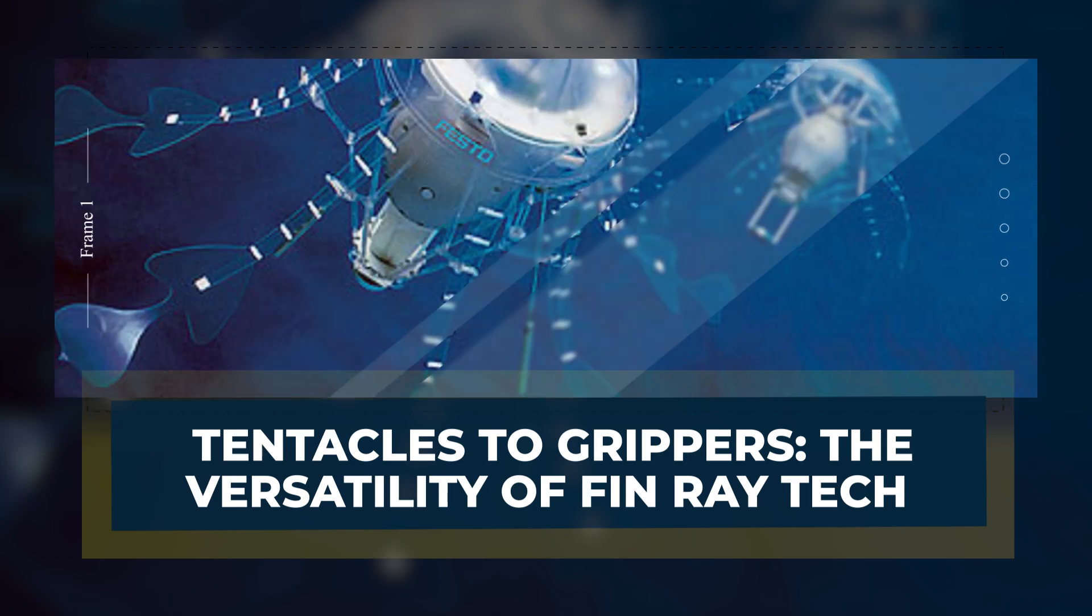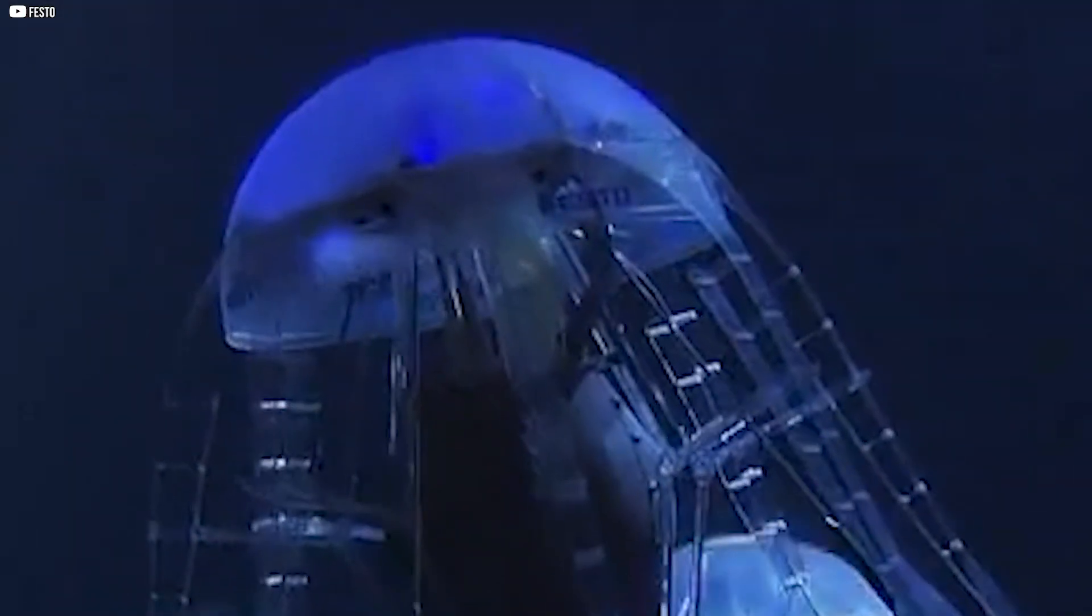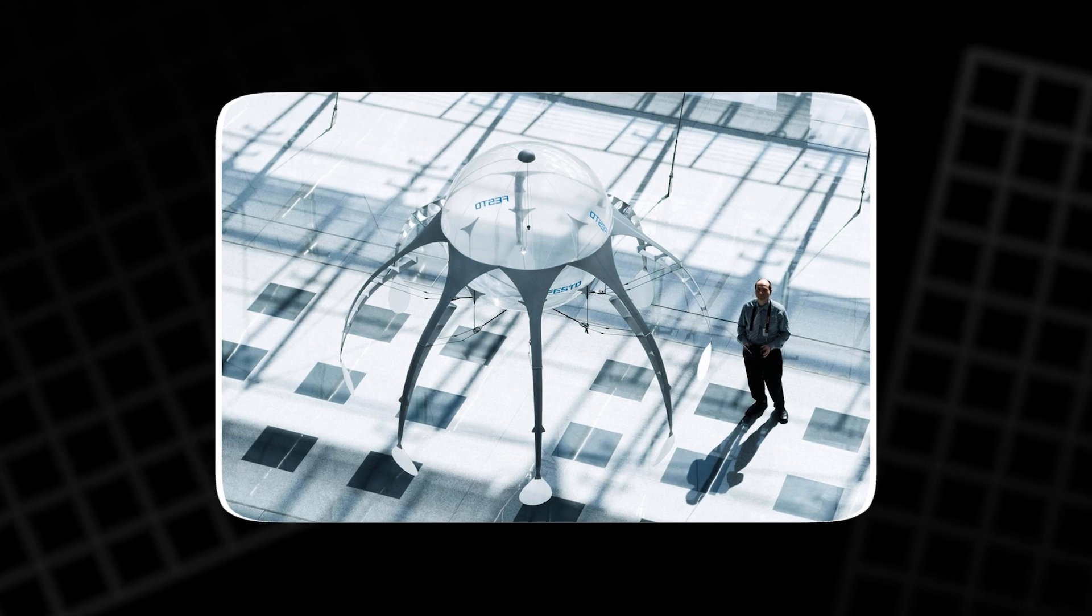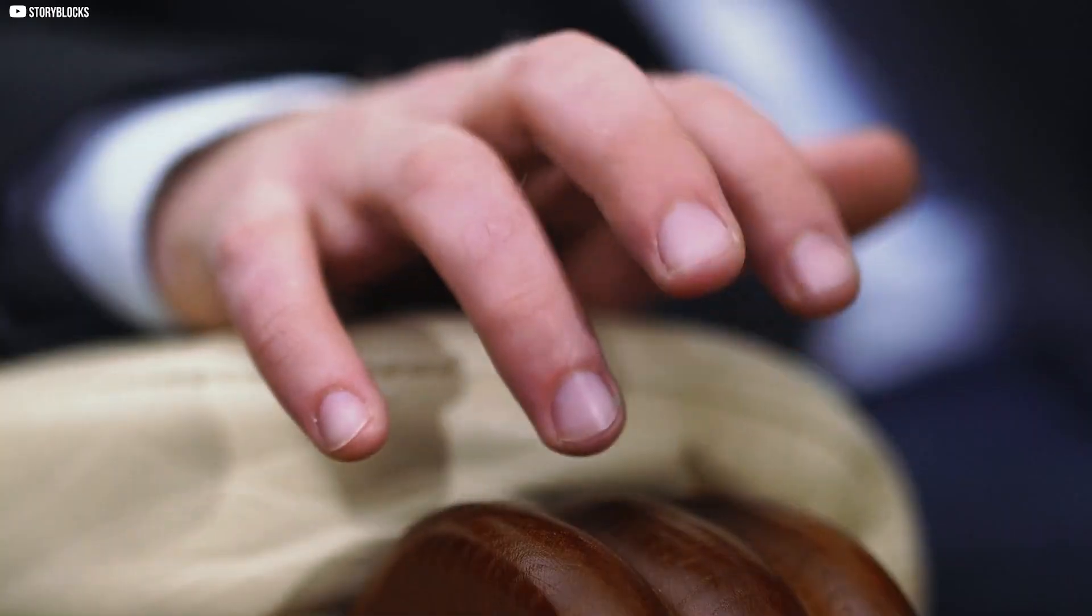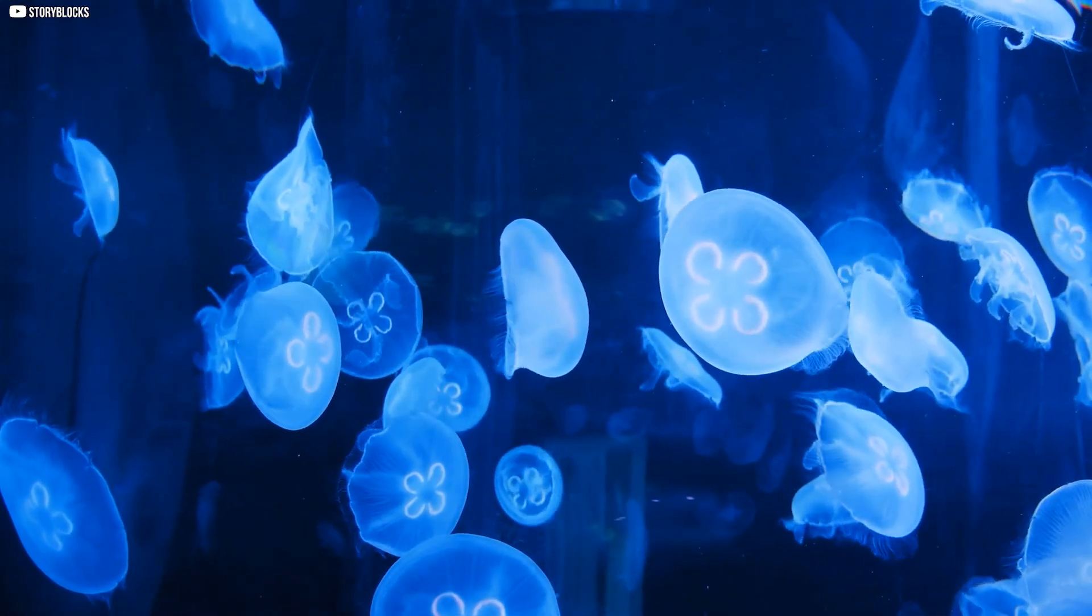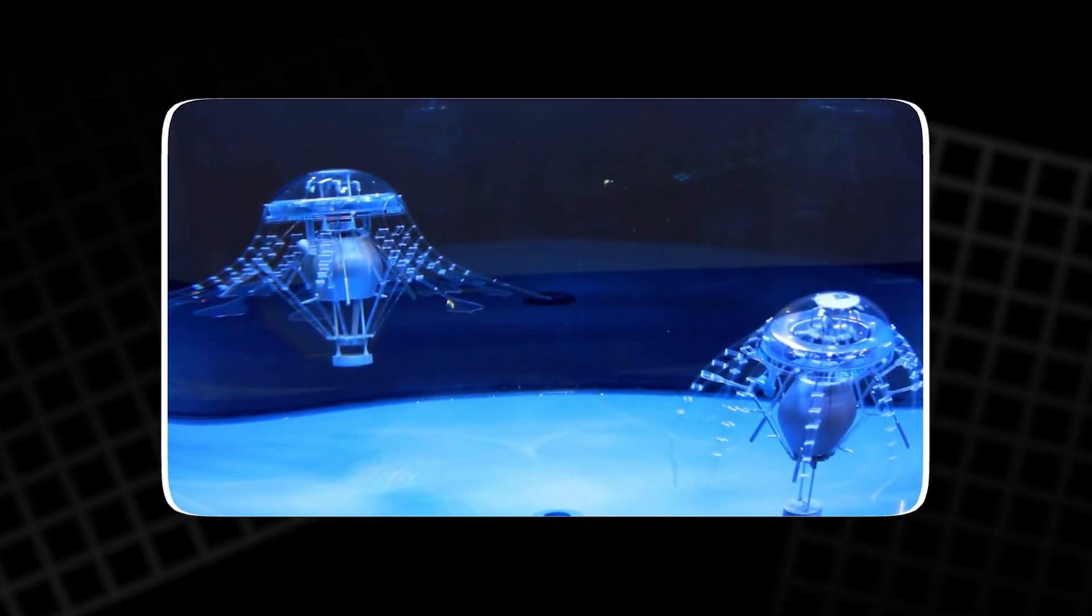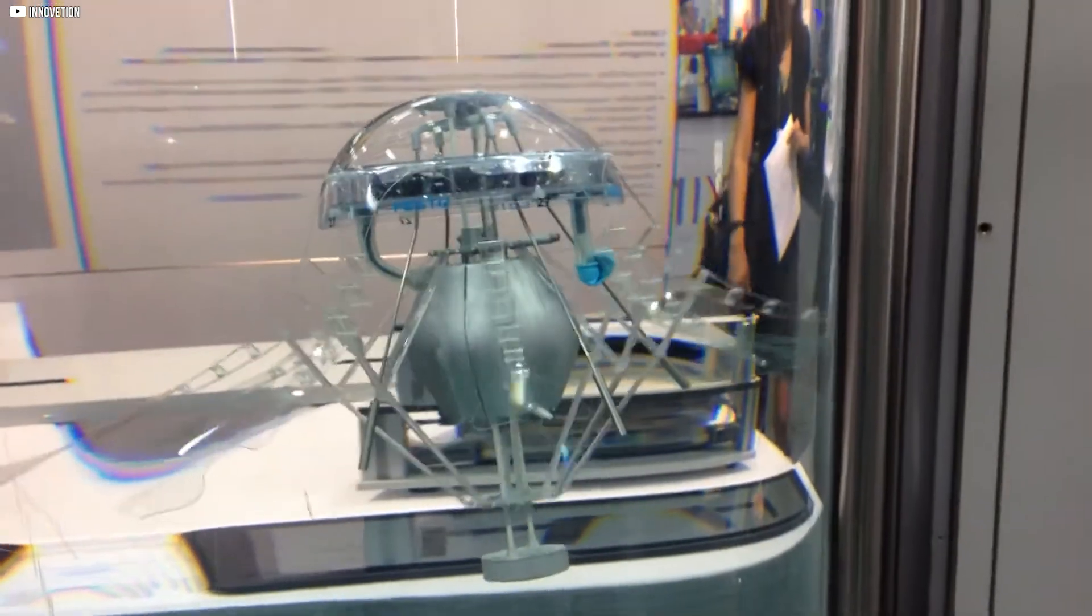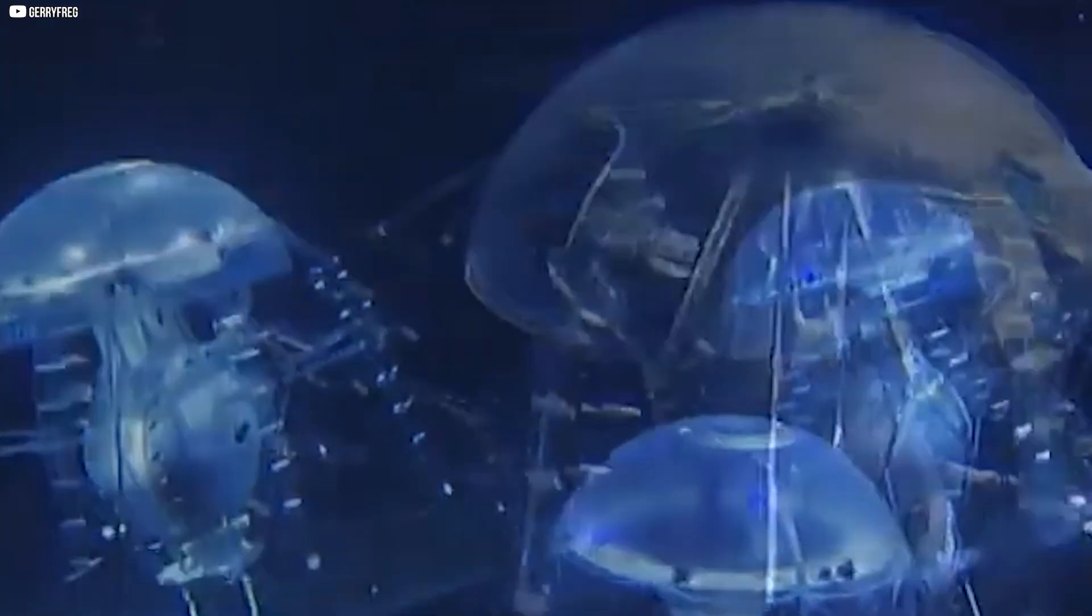Tentacles to grippers. The versatility of finray tech. The soft, flexible arms of the Aqua jelly aren't just for swimming. They're made with Festo's finray technology, originally inspired by fish fins. Instead of bending like a jointed robot arm, these structures flex and twist like living tissue. That makes them ideal not only for swimming, but for gripping. In factories and labs, robotic arms using finray tech can adapt their grip to fragile or irregularly shaped objects, just like fingers. This crossover is what makes bio-inspired tech so powerful. You start by trying to copy a jellyfish and end up with tools that can revolutionize everything from underwater monitoring to robotic surgery. The key is in the structure. Simple, soft and passive. No gears, no blades, just material that reacts intelligently to pressure.